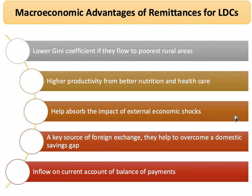Here are some extra macroeconomic points. If remittances flow to lower income households, and in particular if they flow to families in poor rural areas, then remittances can help to bring down the level of inequality as measured by the Gini coefficient. And if remittances are used to fund basic infrastructure and basic tools — better seeds and fertilisers, for example — that can lead to higher productivity in farming, as well as better productivity from increased and improved nutrition and basic health care.